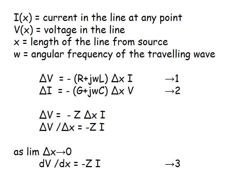ΔV and ΔI are the decremental voltage and current. The output voltage and current of the transmission line are decremented by ΔV and ΔI from the initial values Vs and Is. Since the quantities are decreasing, they are expressed with a negative sign. By Ohm's law, V = RI, and here the resistance is an impedance (R + jωL) over the incremental element Δx, multiplied by I.